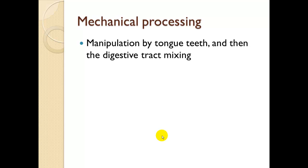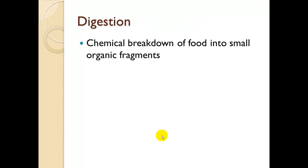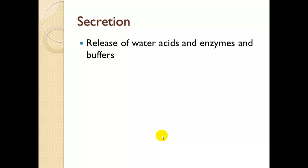Mechanical processing is manipulated by the tongue, teeth, and palate, and then by the digestive tract as it mixes the material through the digestive system. Digestion is the chemical breakdown of food into small organic fragments, done by tons of enzymes secreted into the mixture as it continues through the digestive tract. Secretion is the release of water, acids, enzymes, and buffers — the stomach secretes, the small intestine secretes, and the salivary glands provide secretions in the oropharynx.